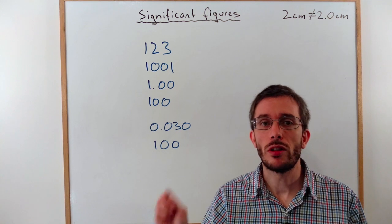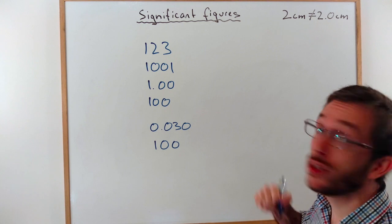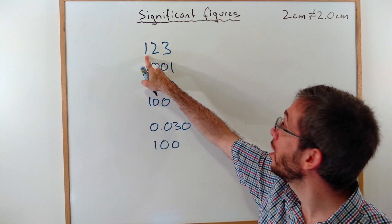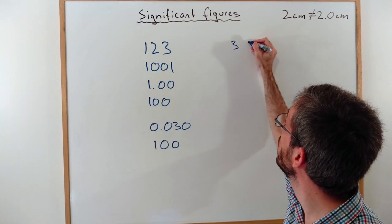Often, it is necessary to count the number of significant figures. There are some rules with this. First of all, any number that is not a zero will always count. So here in my 123, I would have 1, 2, 3 significant figures.